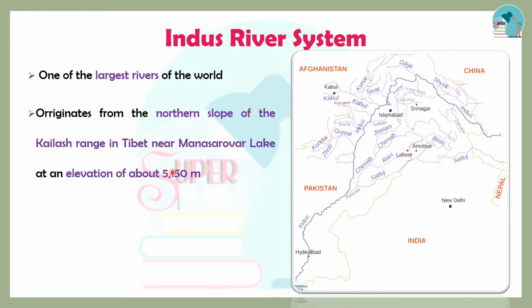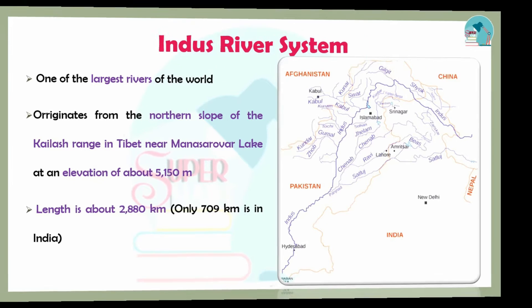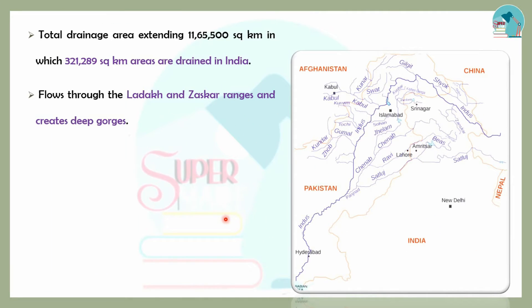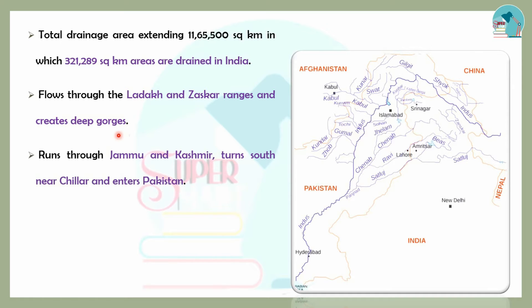The Indus River has an elevation of 5,150 meters and a total length of 2,880 kilometers, with 709 kilometers within India. Its total basin area is 11,65,500 square kilometers, with 3,21,289 square kilometers in India. It flows through the Ladakh-Zanskar Ranges, forming deep gorges in Jammu and Kashmir, before flowing into Pakistan.